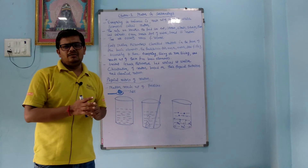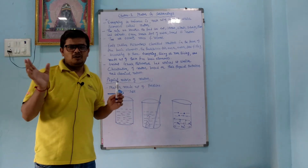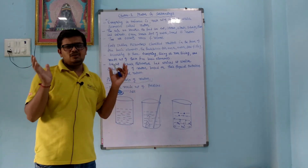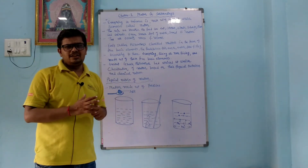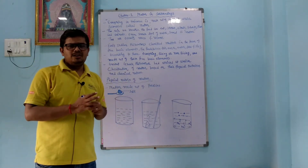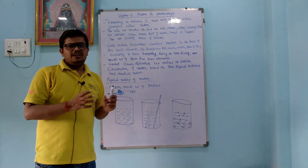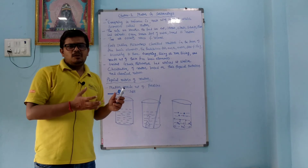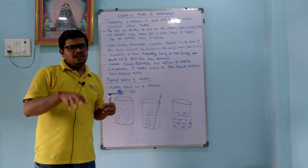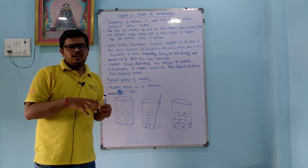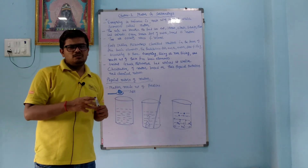A mixture is a substance made up of two or more types of compounds. For example, air contains many gases, and tea or coffee contains many compounds added together — so they are also mixtures.